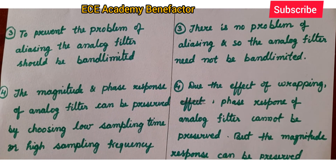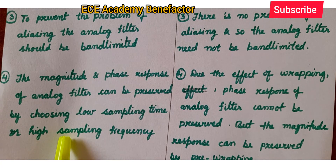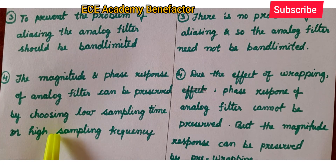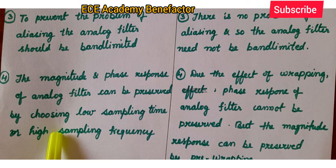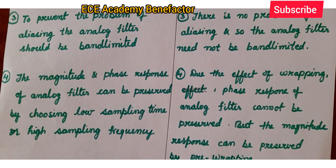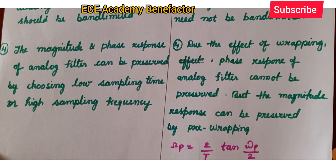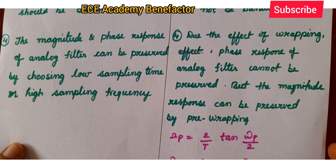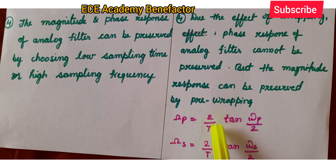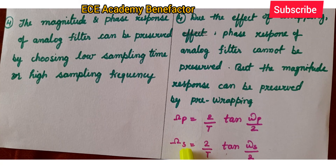The fourth point under impulse invariant is that the magnitude and phase response of the analog filter can be preserved by choosing a low sampling time or high sampling frequency. Coming to bilinear transformation, due to the effect of warping, the phase response of the analog filter cannot be preserved, but the magnitude response can be preserved by pre-warping. Pre-warping is done using: Omega_P = (2/T) * tan(omega_P / 2) and Omega_S = (2/T) * tan(omega_S / 2).